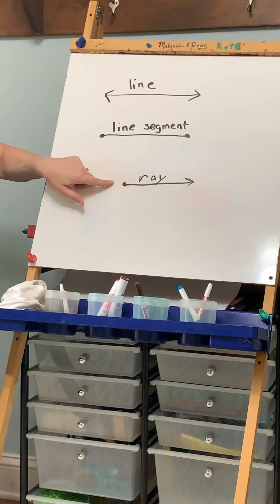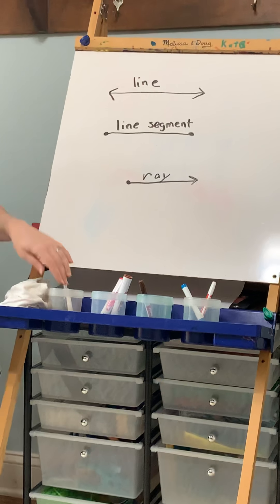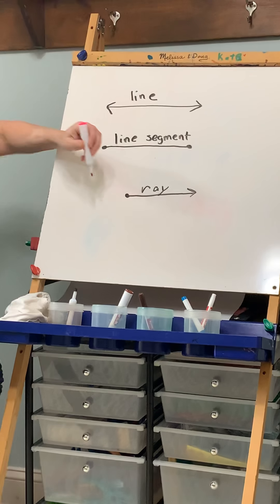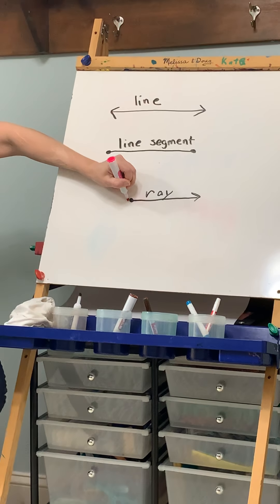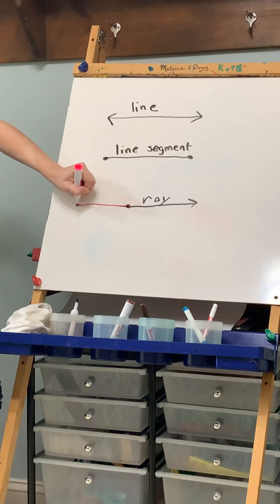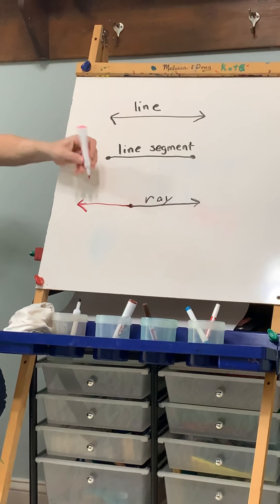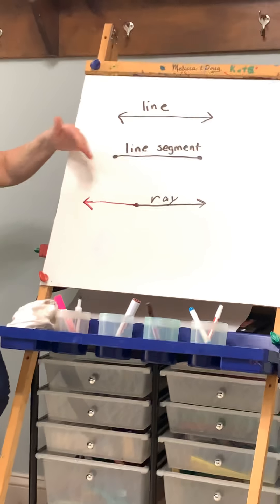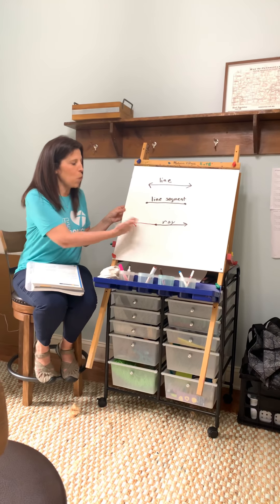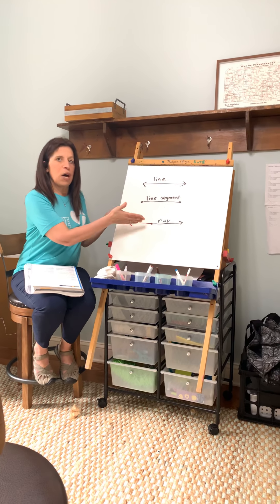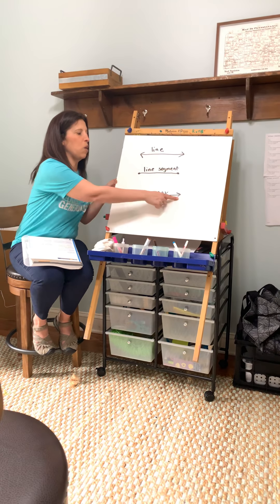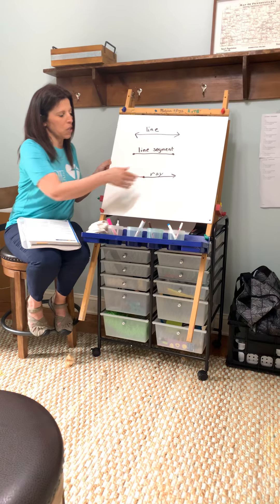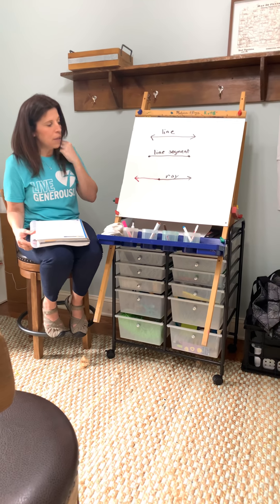A ray can actually start from either direction. Just like a ray of sunshine, it can start from the left going right, or from the right going left. A ray has one starting point, goes in one direction, and is non-stop in that direction — it goes without end in one direction.